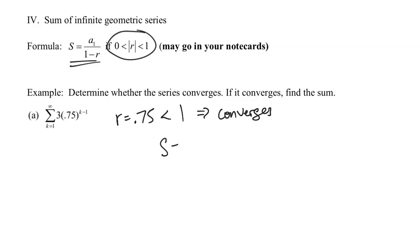Because it converges, I can find the sum. The sum equals a1 over 1 minus r. I know the ratio is 0.75, so I can put that in my denominator. What I want to do now is just double check to see what the first term is. It looks like it's 3, but don't be deceived because sometimes it won't be. The surefire way to know what the first term is is to plug in that lower limit for k, and so here I'm going to go ahead and do that.